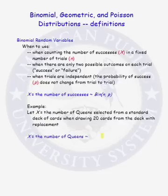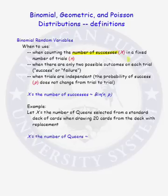We use a binomial distribution when we are counting the number of successes — and we call that x, that's our random variable x — in a fixed number of trials n. n is a fixed number, it is known. In our problem, n was ten. I'm rolling a die ten different times, and I want to know the number of times I roll a three or a six.